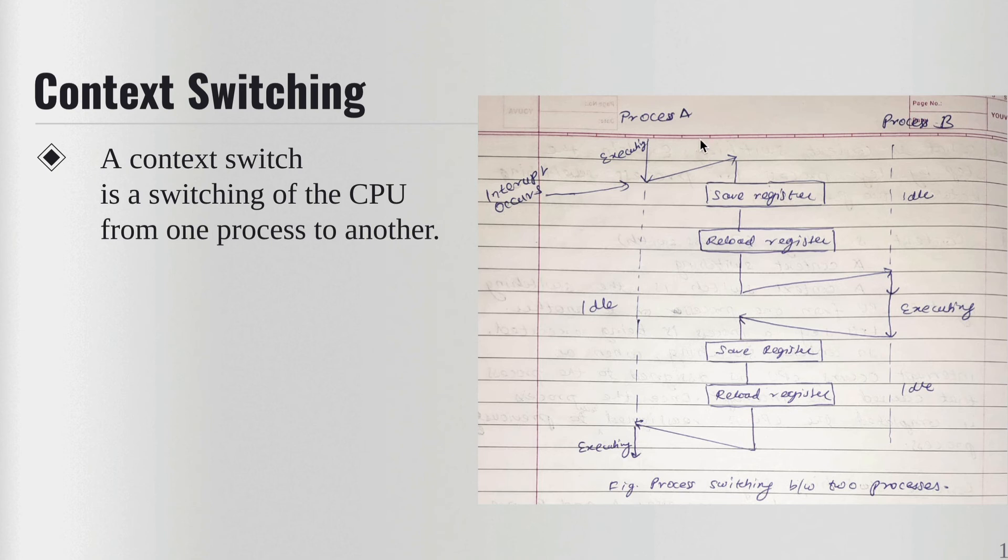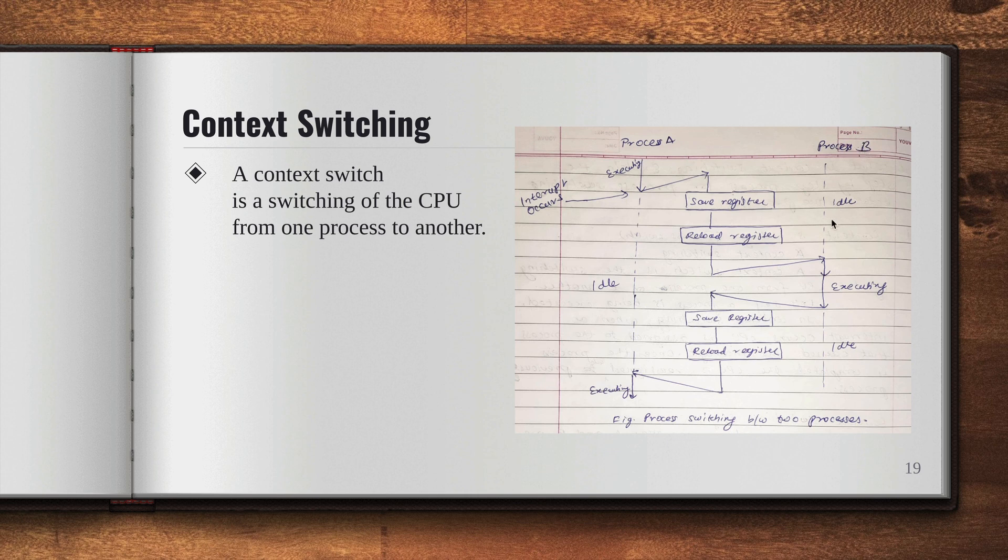In simple words, while one process is executing, an interrupt occurs and the CPU is switched from one process to another. Meanwhile, we also save the context of the processes so that we can resume them when we want to, after the other process has finished executing. I hope that is clear to you.